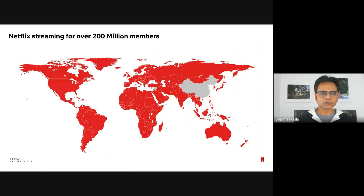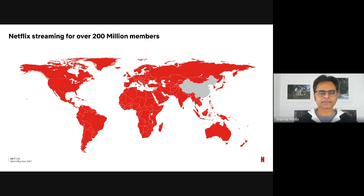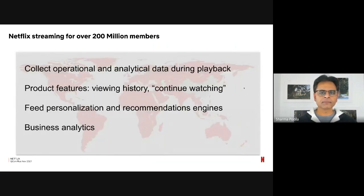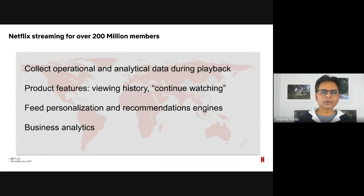Netflix is available to over 200 million members worldwide. Members watch TV shows, documentaries, and movies on a variety of devices. When they come to Netflix, they are given a variety of choices through our personalized recommendations. You press play, sit back, and enjoy watching the movie. While the movie plays during playback, we collect a lot of data for both operational and analytical use cases. Some of this data drives product features like viewing history and continue watching, which lets members stop a movie and come back to continue watching from that point on any device. The data also feeds personalization and recommendation engines and core business analytics.